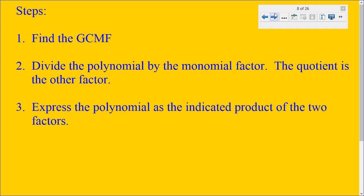Steps you should know. Find the GCF or GCMF. Step 2, divide the polynomial by the monomial factor. The quotient is the other factor. Step 3, express the polynomial as the indicated product of two factors.